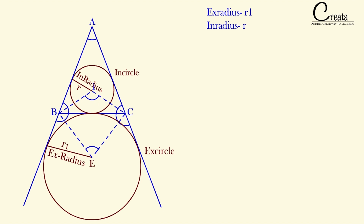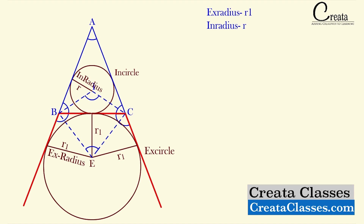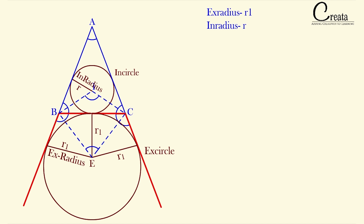This x-radius R1 will be at equidistance from the three sides of the triangle — that is one main side and the two extended sides. The two extended sides and the one main side are acting like tangents to this x-circle. A tangent is a line segment which touches only one point of the circle, so these three sides are tangents to the x-circle. We know the property of the tangent: a tangent makes a 90-degree angle with the radius, so all three angles here are 90-degree angles.